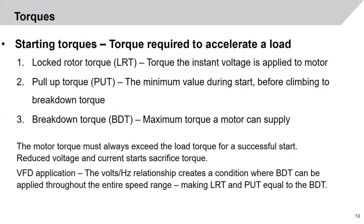Now there are also starting torques — the torque required to accelerate the load. The two specifically to be concerned with are lock rotor torque, which is the torque the instant voltage is applied to a motor, and pull-up torque, which is a minimum value during the start of the motor before it climbs up to breakdown torque. Breakdown torque is the maximum torque a motor can supply running close to its rated speed. The motor torque must always exceed the load torque for a successful start. If you reduce voltage or reduce current, it will sacrifice torque.